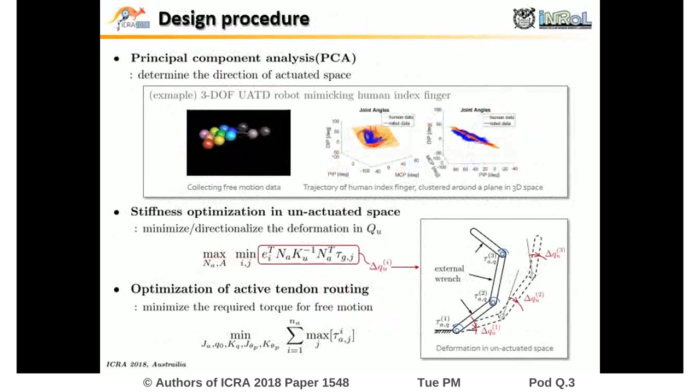Design objectives are one, making the UATD system as compliant as possible during free motion, and two, making it to reduce undesirable external wrench as possible during contact operation.